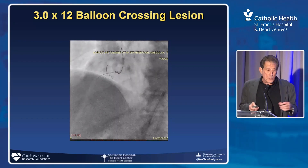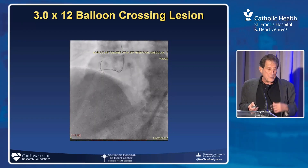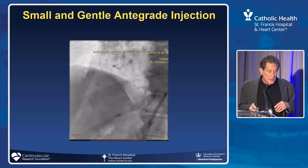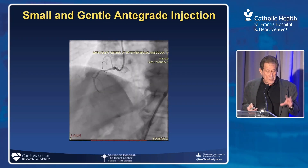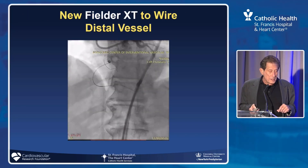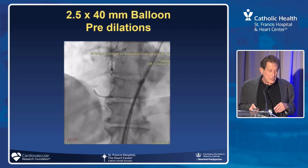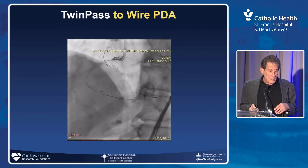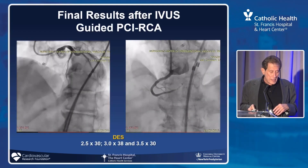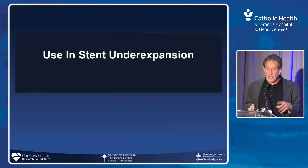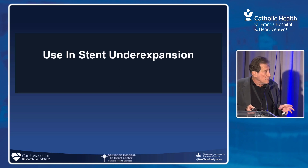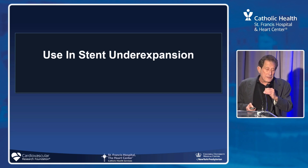After the laser, the balloon crossed — the 3-0 balloon crossed — and we could advance our Turnpike down. We couldn't see the distal vessel, so we did a very gentle antegrade injection, placed the Fielder XT distally, and were able to balloon. We got a wire in the PDA and here is our final result. That's the great use for an uncrossable lesion when you have the wire across and no ability to get an atherectomy wire across.